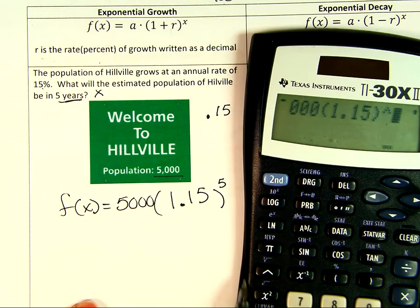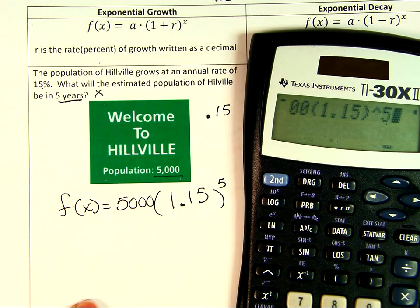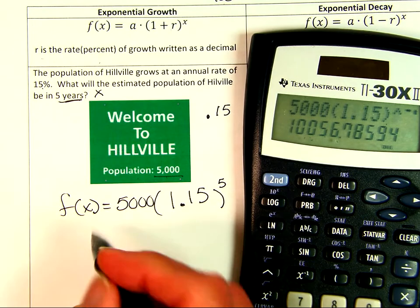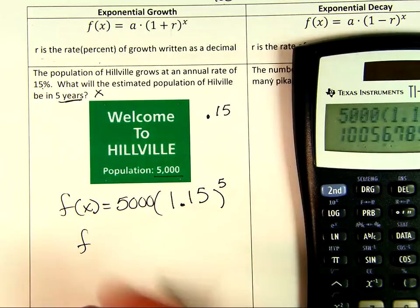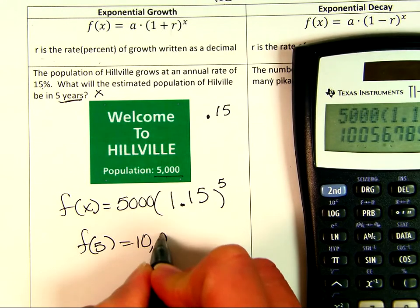We're going to take 5,000. Now here's where parentheses are really important, because we don't want to multiply these before we do our exponents. So I'm going to put the 1.15 in parentheses, and I'm going to take that to the power of 5. And it looks like it's going to be 10,056.